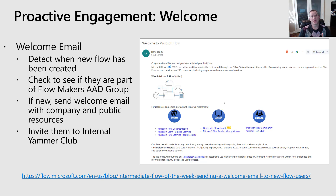Thirdly, it's important to communicate your policies. Most organizations have an acceptable technology use policy, and this is an opportunity to include a link reminding people that their actions will be monitored and that certain behaviors are not aligned with company policies. You can also talk about DLP — if specific actions are going to be blocked, communicate this up front so people aren't blindsided after building a flow that sends email to Gmail, for example. Educate them up front that such behavior is not acceptable.